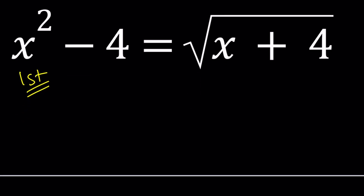For my first method, I want to do brute force — square both sides. You usually do that with radical equations. You want to get rid of all the radicals and turn this into a polynomial equation.